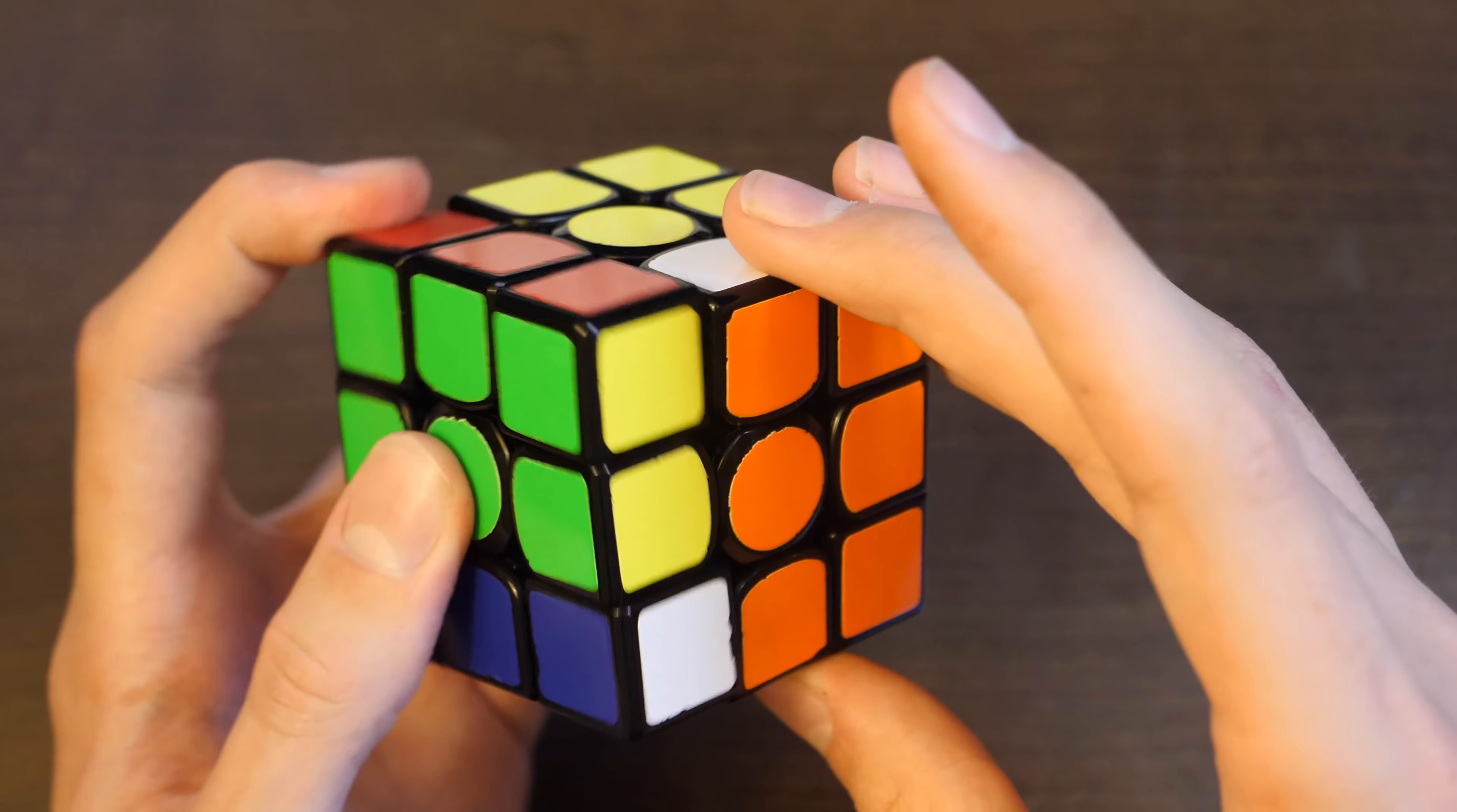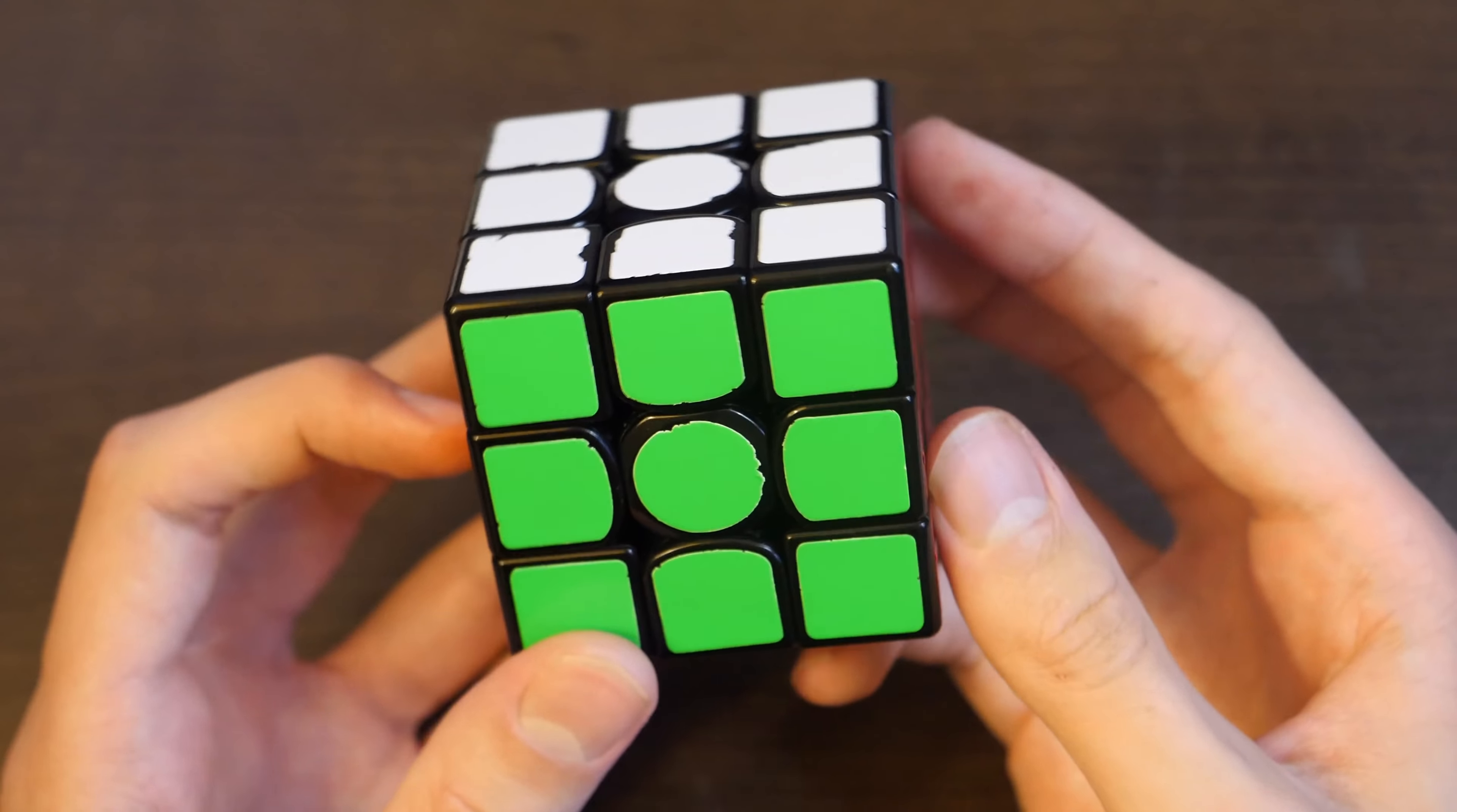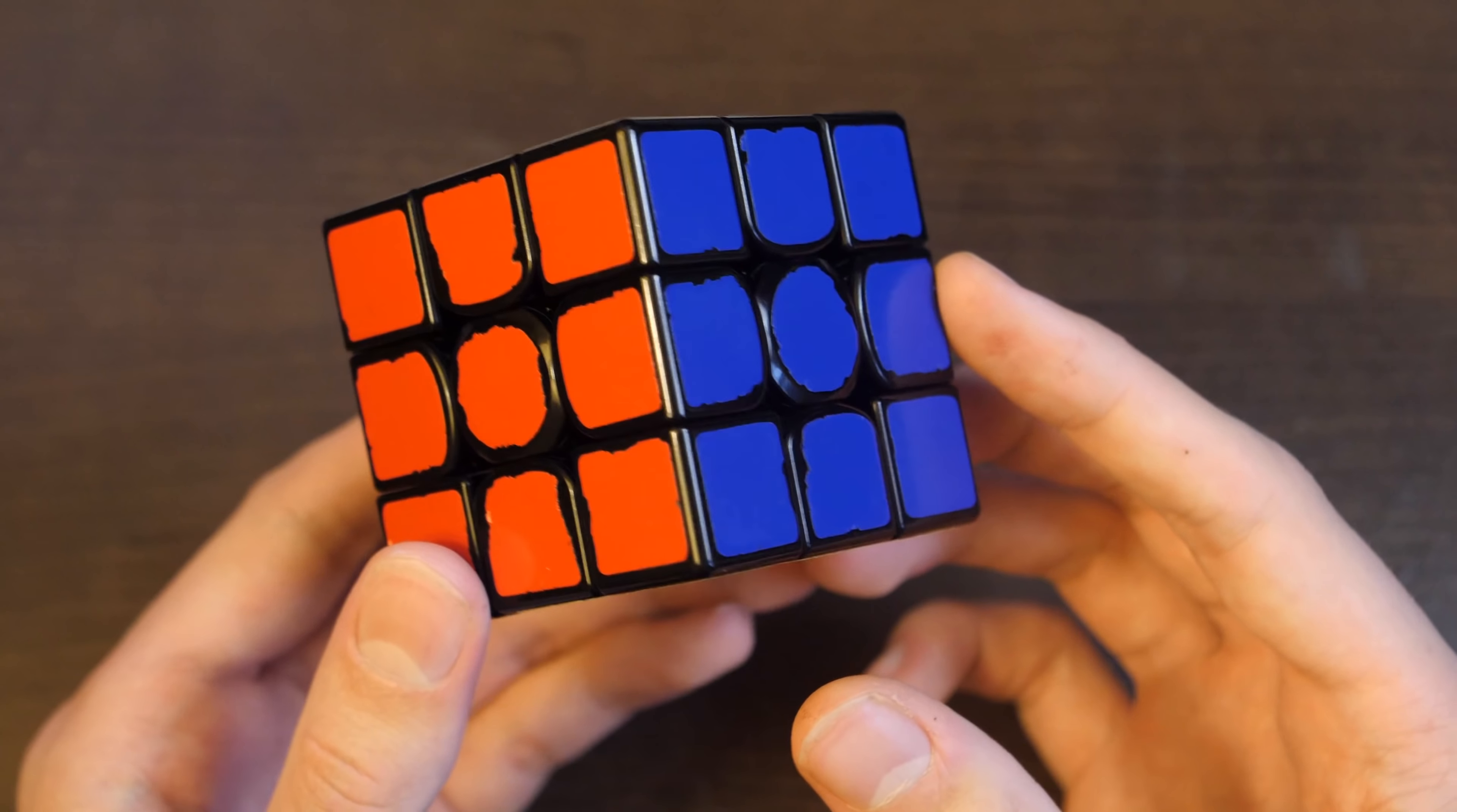This was the last solve of his average. And if he had gotten 6.25 or lower, he would have had a sub six. And if he had gotten 5.68 or lower, he would have broken the world record at the time, which is 5.8.